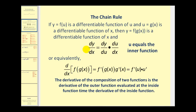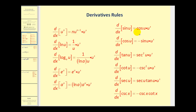The chain rule can be written using Leibniz notation or function notation, but essentially it states that the derivative of a composite function is equal to the derivative of the outer function times the derivative of the inner function, where u is the inner function. When we look at the derivative formulas, notice that all the x's have been replaced with u's, meaning u could be an inner function.